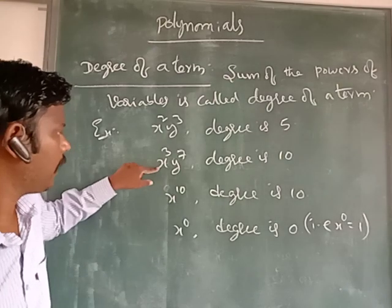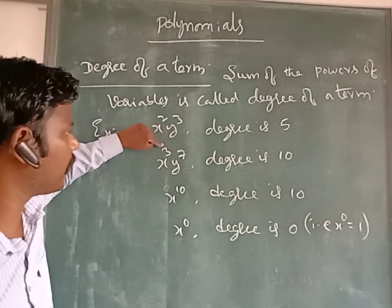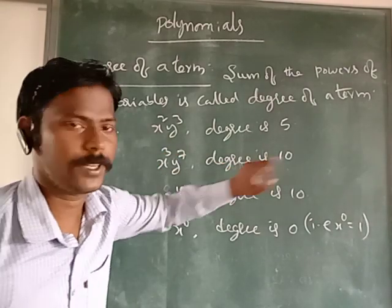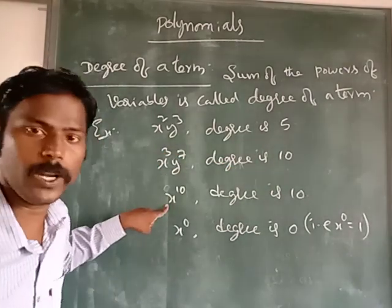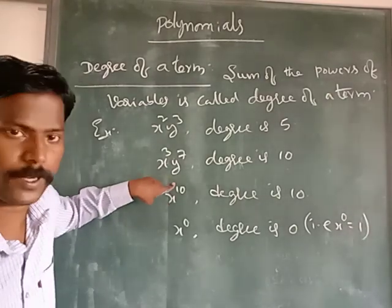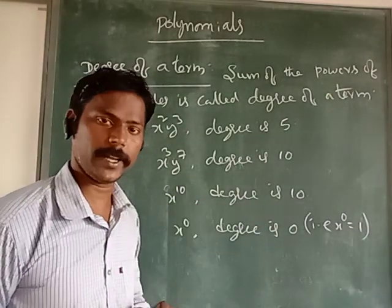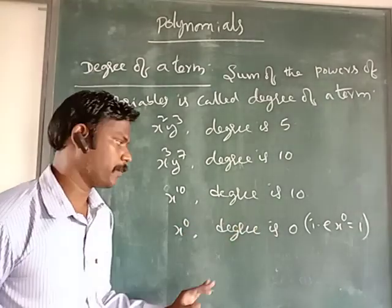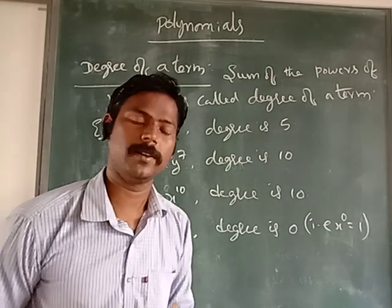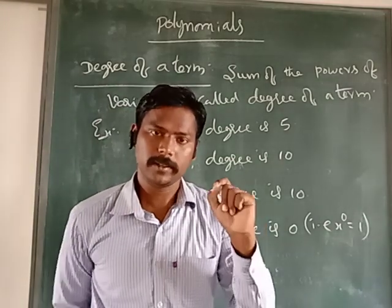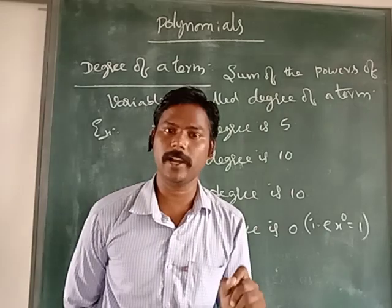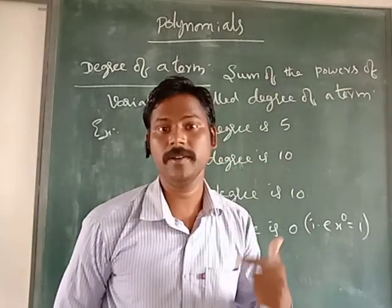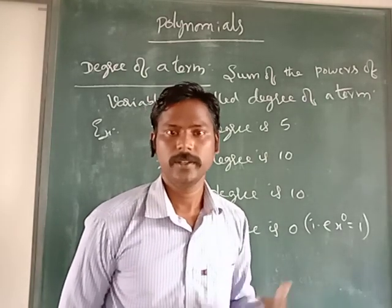Another example: x³y⁷ — x has power 3, y has power 7, so 3 + 7 = 10. Its degree is 10. Next, what is the degree of x⁰? The power is 0, but x⁰ = 1. Any variable to the power 0 is always 1. We learned this in exponents and powers in the previous class.